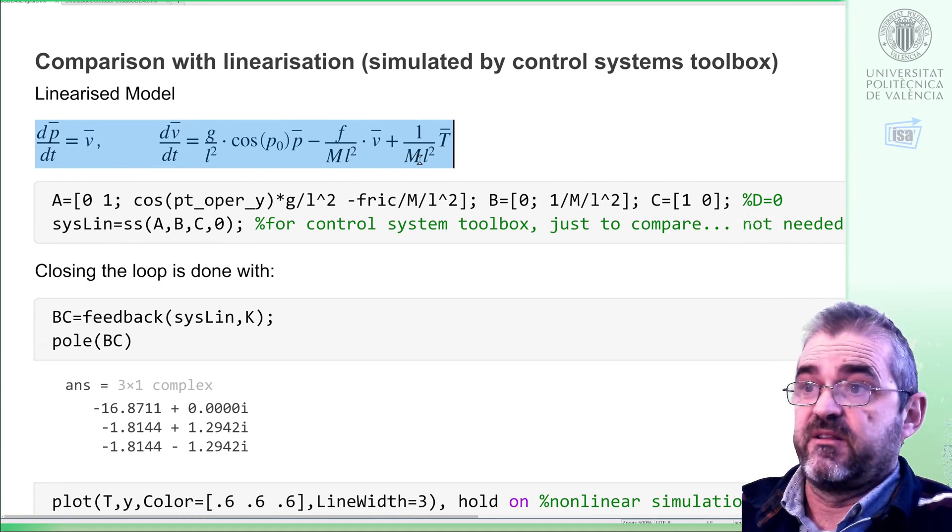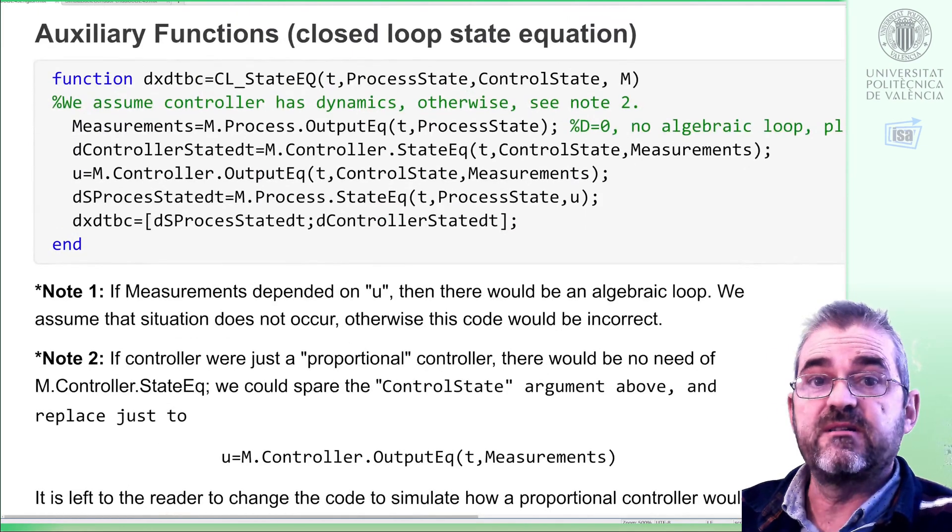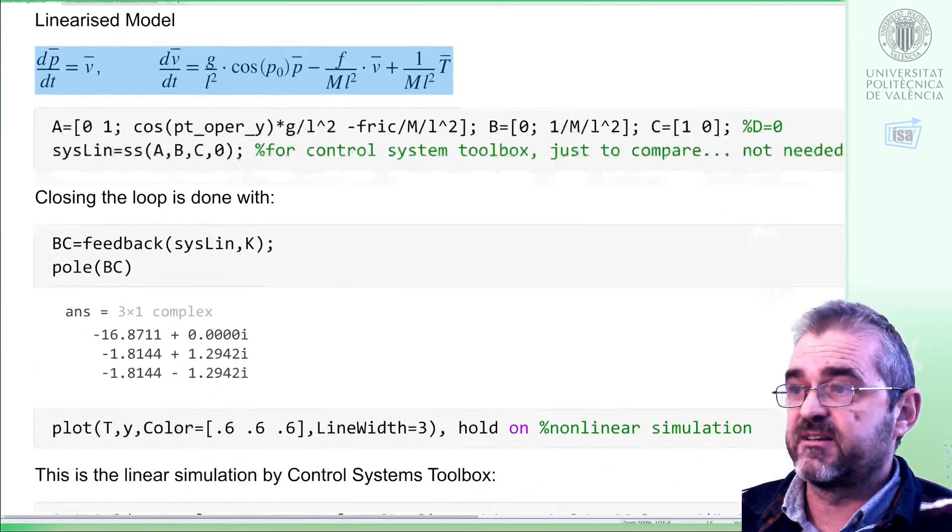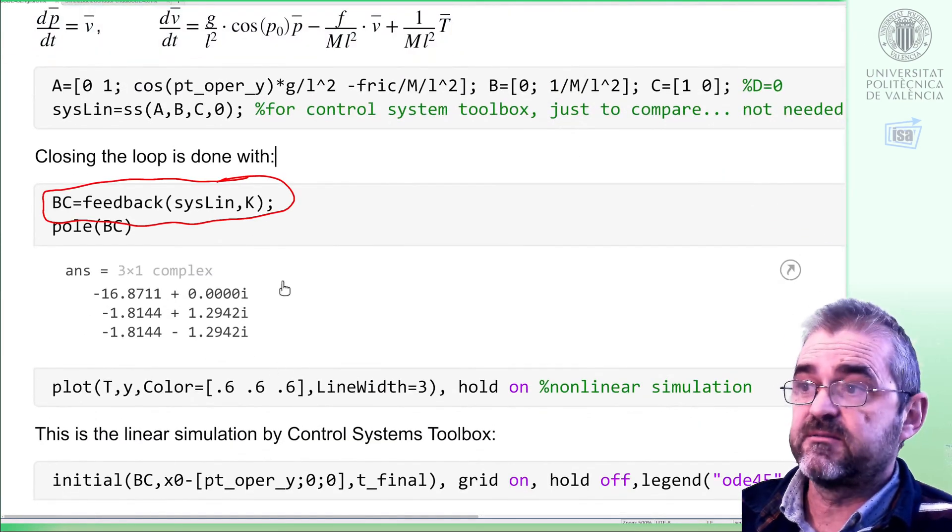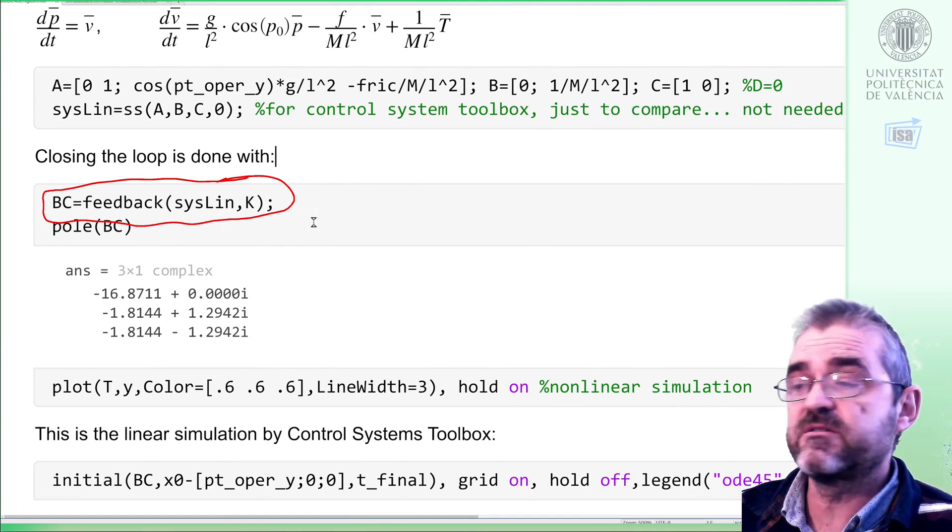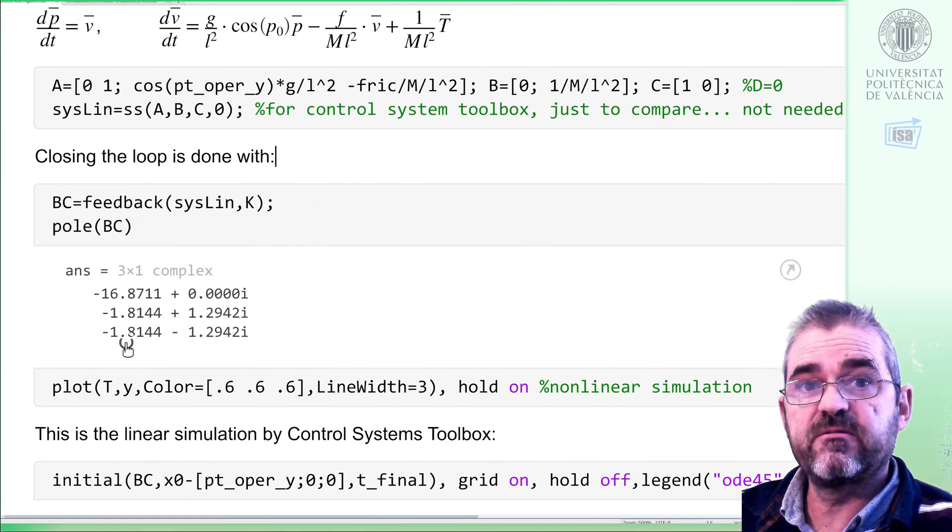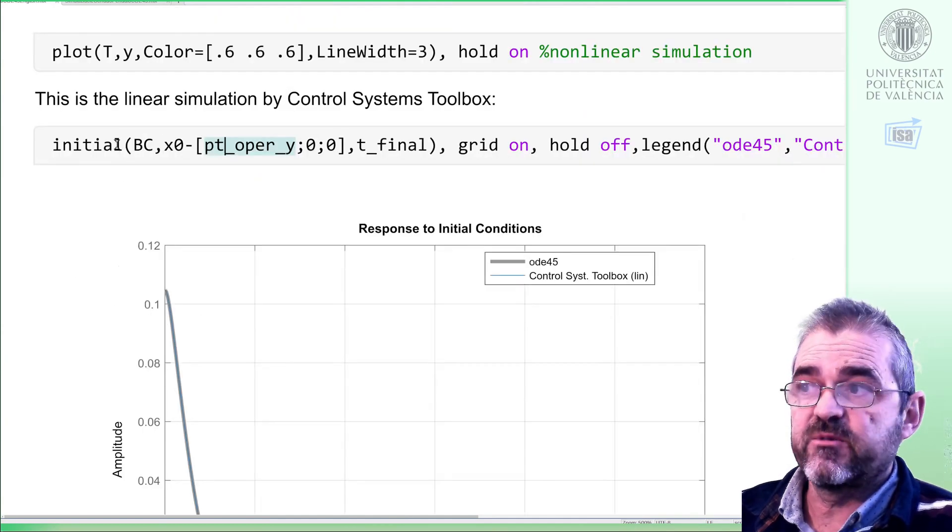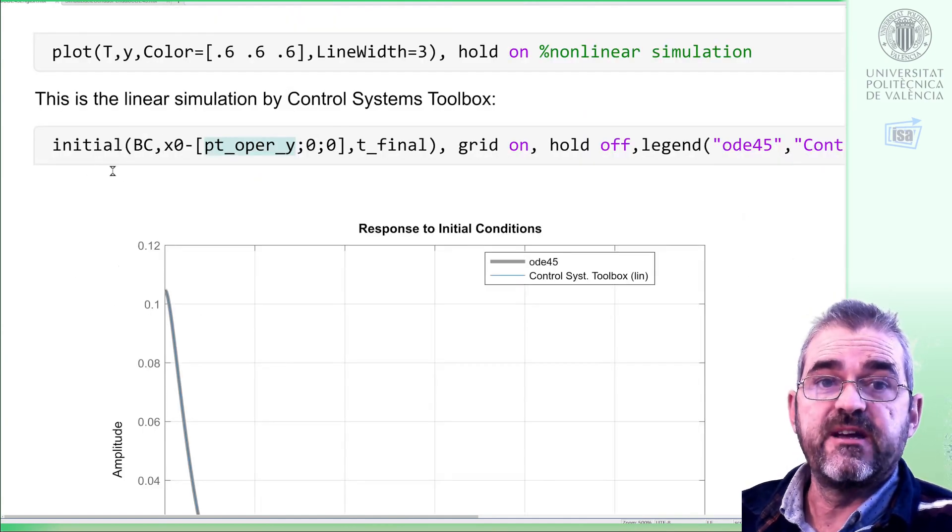Then the feedback interconnection that we did here in a generic nonlinear case—well, if both systems are linear, the feedback command computes this kind of closed loop state and output equations. The poles are stable, negative real part.